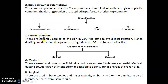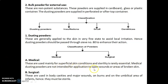Dusting powders are generally applied to the skin in a very fine state to avoid local irritation. Hence, dusting powders should be passed through sieve number 80 to enhance their action. Classification of dusting powder is medical and surgical. Medical dusting powders are used mainly for superficial skin conditions and sterility is rarely essential; they are not intended for application to open wounds or areas of broken skin. Surgical dusting powders are used in body cavities and major wounds, on burns, and on the umbilical area of infants; hence they must be sterile.